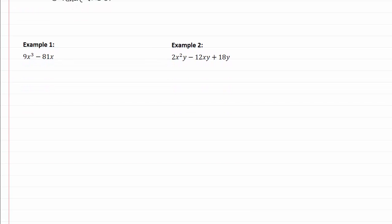If we look at our numbers, they're both divisible by nine. So I can pull nine out and our rule for variables is this is always going to be the lowest exponent. So we're going to pull out an x and that's going to leave us with x squared minus nine.